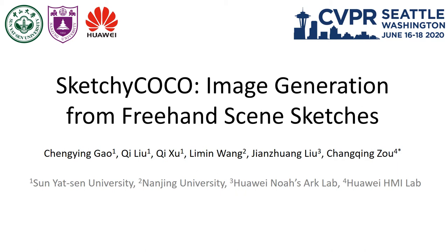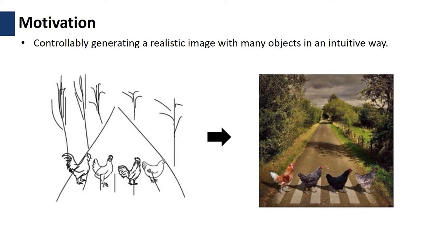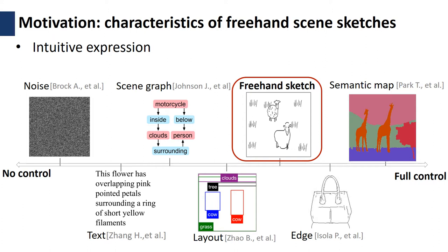This problem is to automatically generate a realistic image depicting a scene from a freehand sketch. Compared to query data like texts, semantic maps, layouts, or scene graphs, a freehand scene sketch in this work has its unique strength.